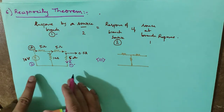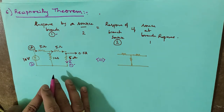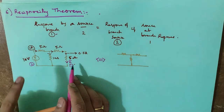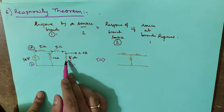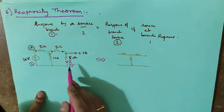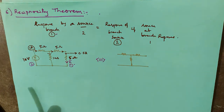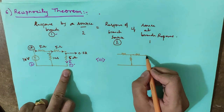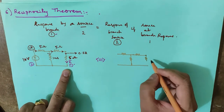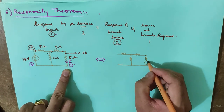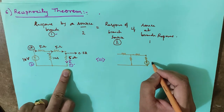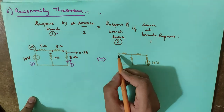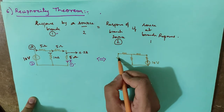Now I need to interchange these two. Interchanging means only the response and the source are swapped — not the other elements. The resistances should be kept constant in their positions. Only the source is moved. So the elements — 5 ohm, 10 ohm, 5 ohm — remain where they are. Only the voltage source of 10 volts is now placed at the response branch, and the current I is now measured at the original source branch.